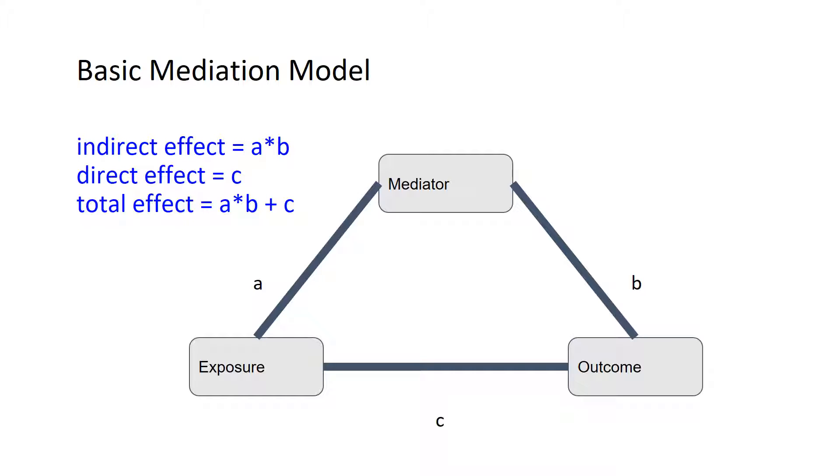With this full model we can calculate the direct effect of exposure on outcome, which is clear here as path c. We can also calculate the indirect effect of exposure on outcome through the mediator by multiplying the a path with the b path. If we want to come up with the total effect, we multiply a by b plus c, and we can get the full effect.